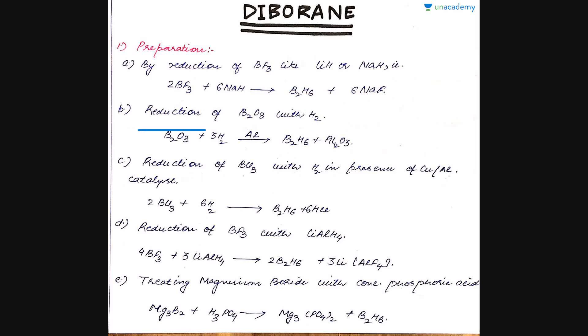Secondly, it is formed by the reduction of boric oxide with aluminum hydride. For example, B2O3 plus aluminum hydride gives B2H6 plus Al2O3. Next is reduction of the chloride with hydrogen in the presence of metals such as copper or aluminum which act as reducing agents. It gives B2H6 plus the metal chloride or acid chloride is left behind.